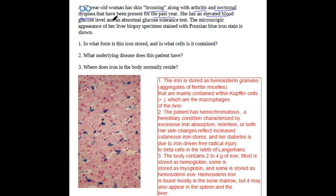She has elevated blood glucose level and abnormal glucose tolerance. The microscopic appearance of her liver biopsy specimen is stained with Prussian blue stain, which is shown in the picture.